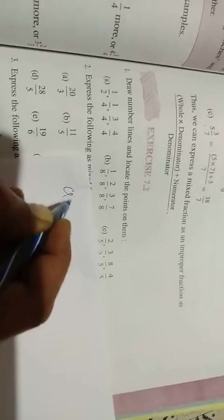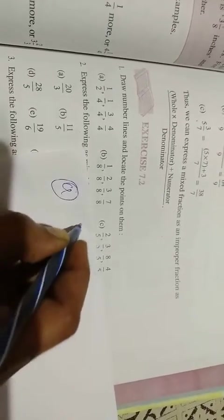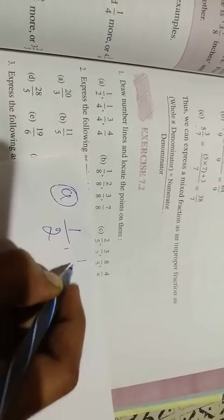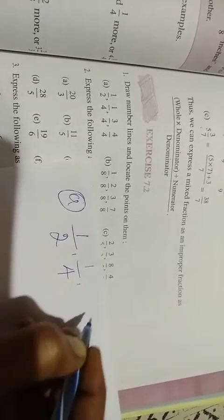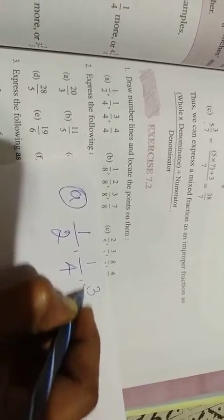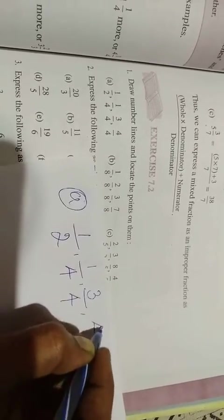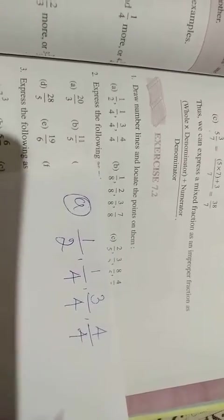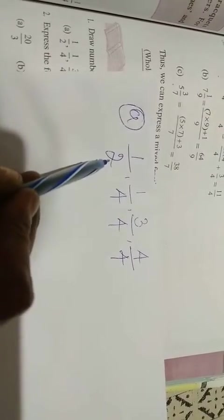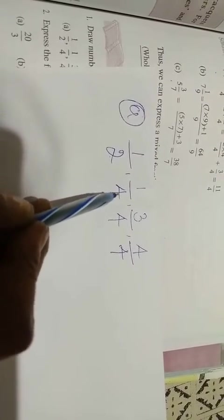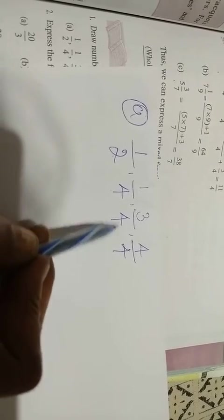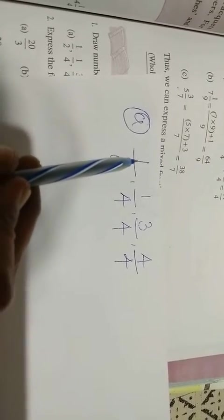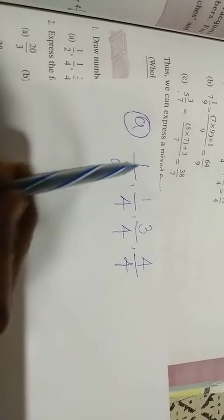I'll solve the first one. The first question has 1 by 2, 1 by 4, 3 by 4, and 4 by 4. Here, only one is left - the remaining all fractions have denominator 4. Only the first one is 1 by 2.